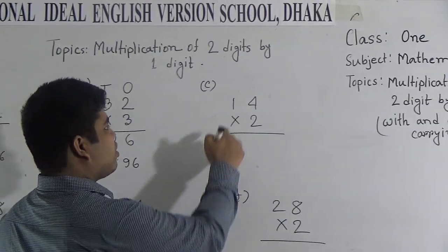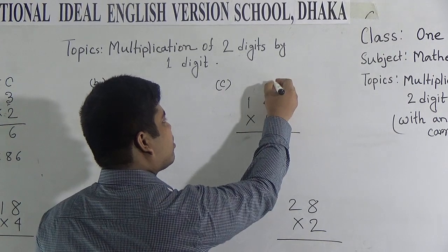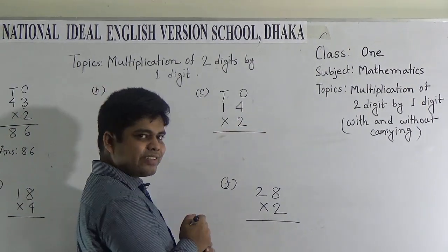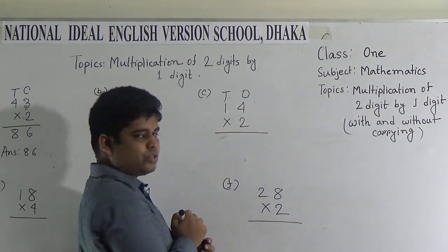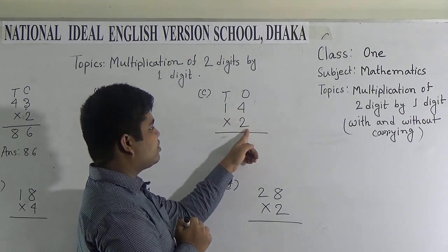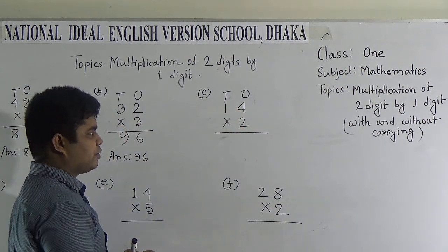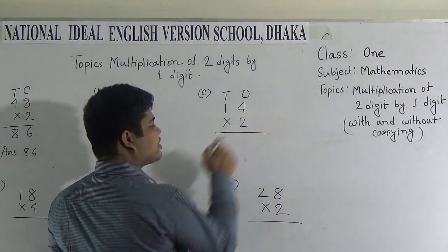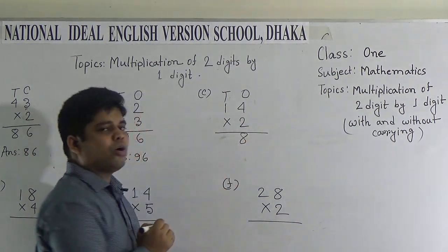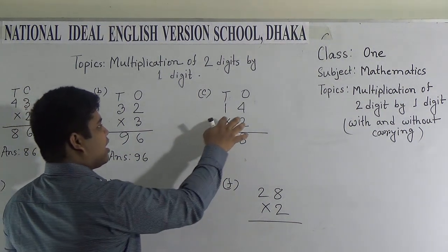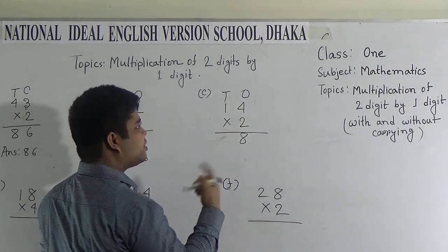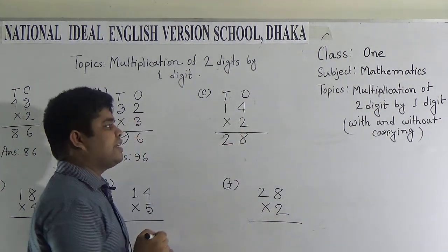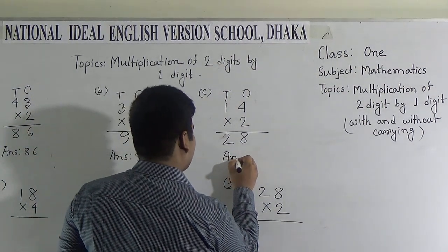Next one: 14 × 2. 4 is in the 1's place and 1 is in the 10's place. So, we multiply 4 by 2 first, then we multiply 1 by 2. We count the times table of 2: 2 1's are 2, 2 2's are 4, 2 3's are 6, and 2 4's are 8. 8 is placed in the 1's place. Now, we count the times table of 2 again: 2 1's are 2. 2 is placed in the 10's place. So, 28 is the answer.